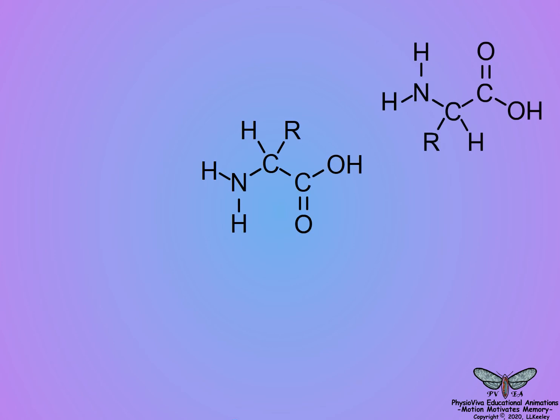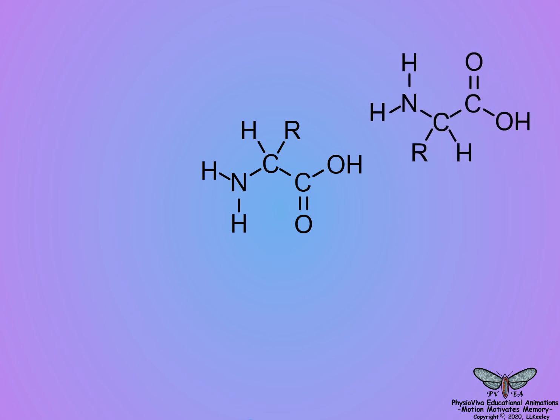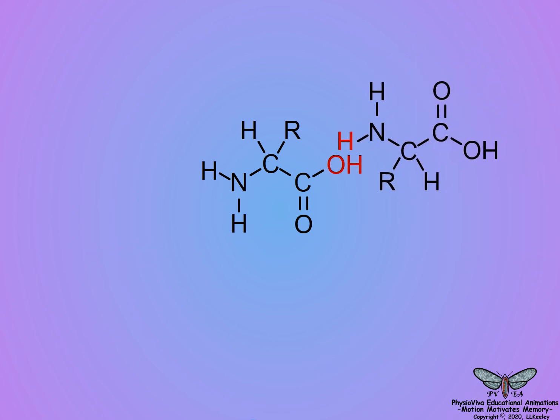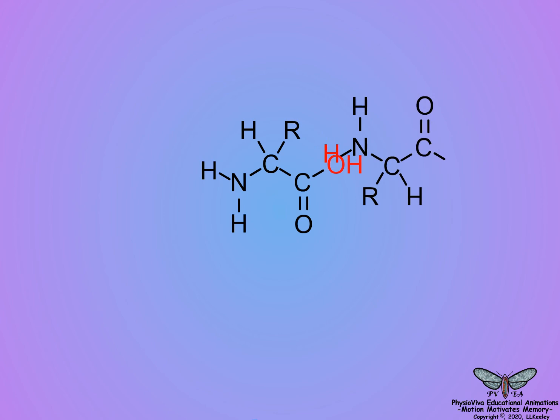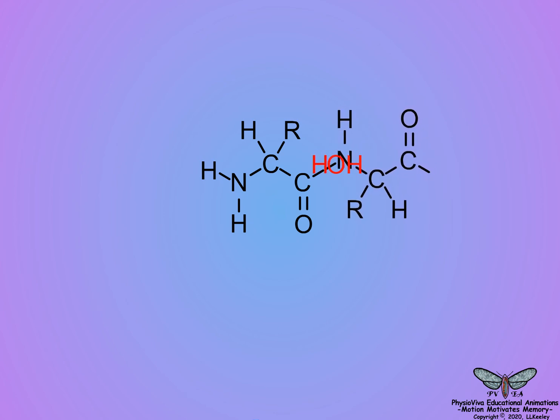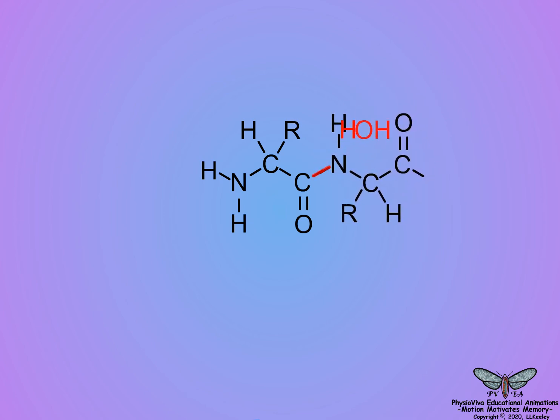Amino acids link to each other with a peptide bond. Peptide bonds form when the carboxyl group of one amino acid nears the amine group of a second amino acid. The amine and carboxyl groups interact and undergo a condensation reaction that produces a molecule of water and the peptide bond.